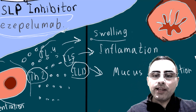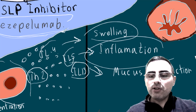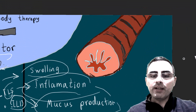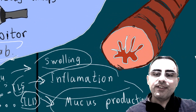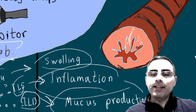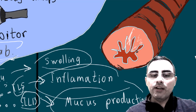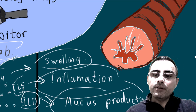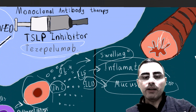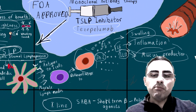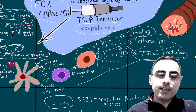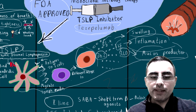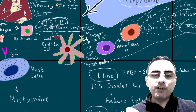These interleukins cause swelling, inflammation, and mucus production, leading to symptoms. Eventually we get a thickened wall of the bronchi, mucus production, inflammation, and ultimately narrowed bronchi and difficulty breathing. This is the most important pathway and it occurs in almost all cases of asthma.